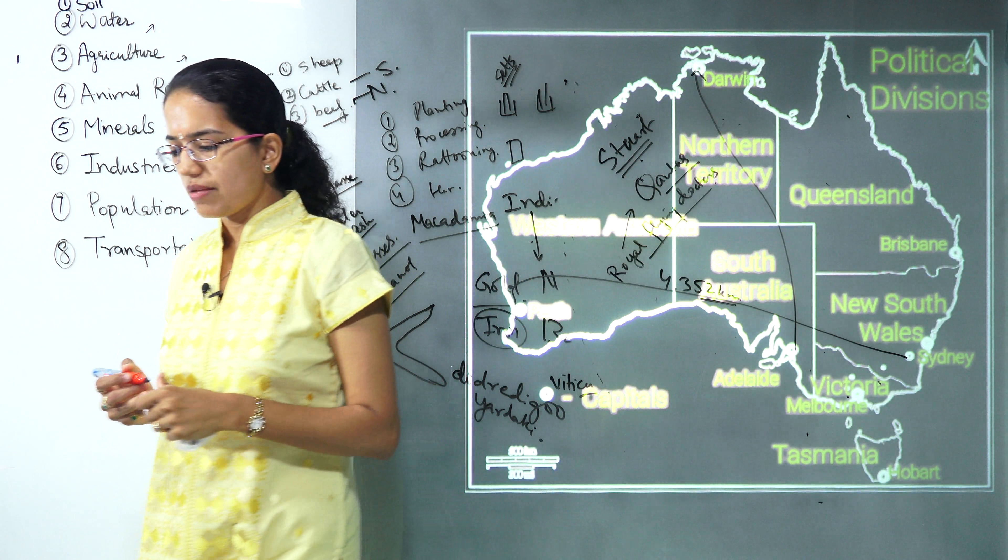With this we cover our second lecture on Australia. In the third lecture we would focus on the continent of New Zealand and all the neighbouring regions - that's Polynesia, Melanesia and Micronesia. Stay tuned for our third lecture on Australia and the upcoming continents in further classes. Have a very good day ahead.